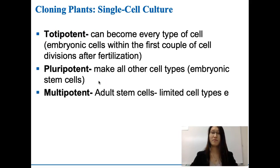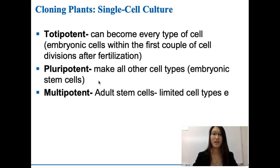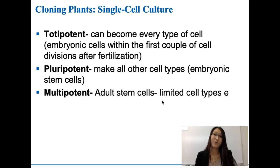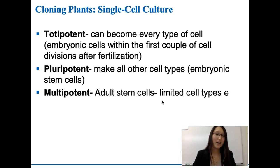The next one is called multipotent — one level down. There are still some potentials for the cell to become other types of cells, but not nearly as many as pluripotent or totipotent. What we're talking about here are adult stem cells. Once the baby is born, or during your development, you will still have adult stem cells that can become certain types of cells, but this is very limited cell types. For example, bone marrow has stem cells that can become certain types of blood cells, but they cannot become skin cells, because now they're adult stem cells with very limited potentials. Your skin cell would be called unipotent, which means it cannot become any other type of cell at all — it's fully developed, fully committed, fully determined.